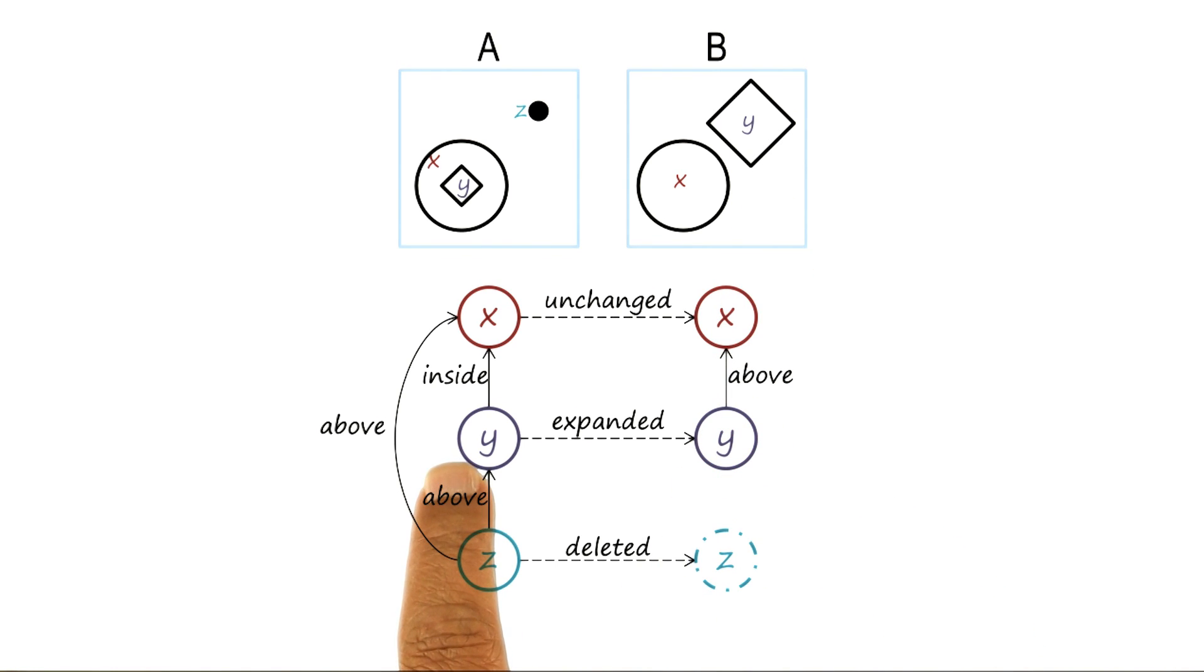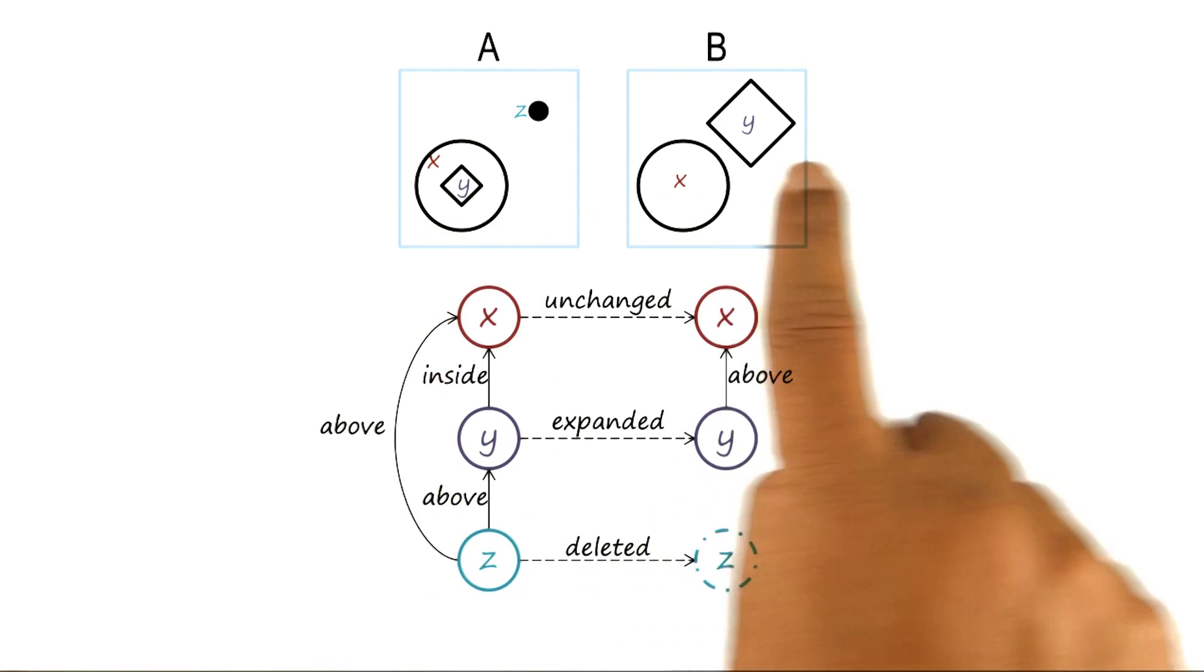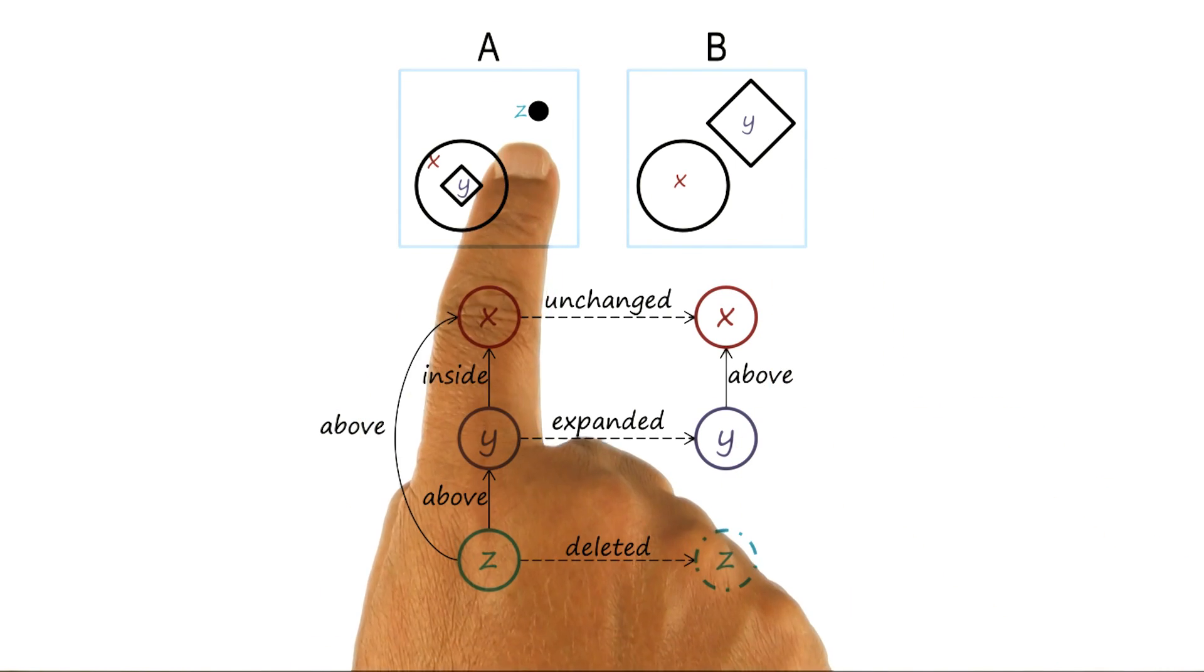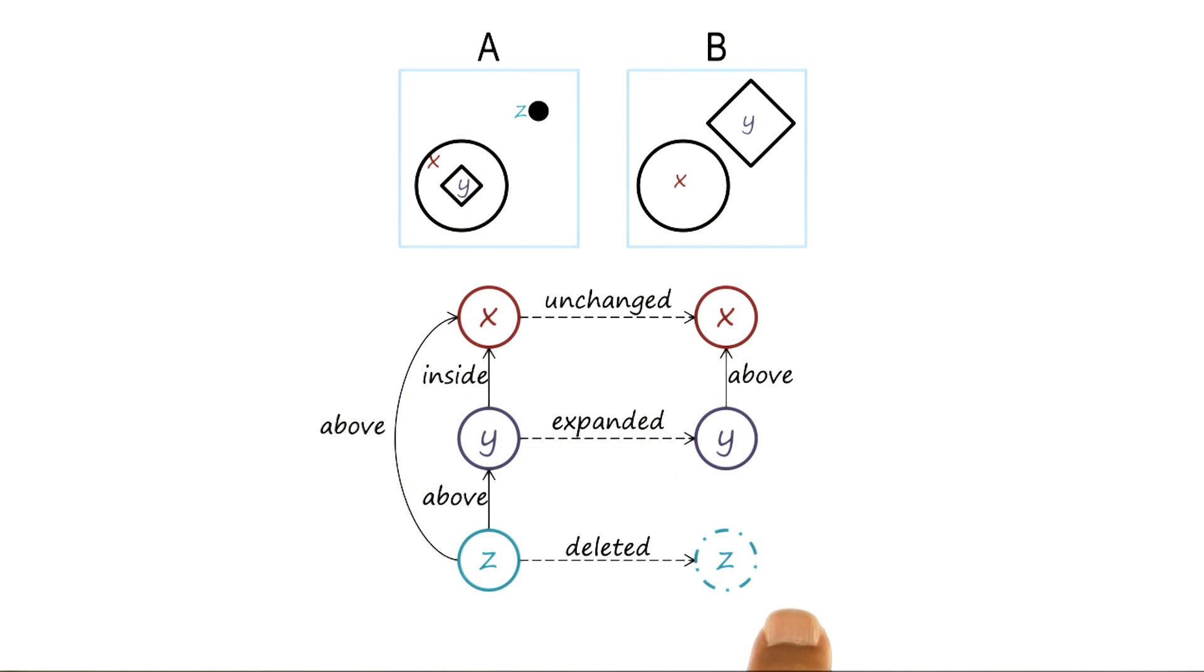Y, on the other hand, has expanded. It was a small diamond here, and it's a much bigger diamond there. Z, the black dot, has disappeared altogether, so we will say it's deleted. It's not there in B at all.